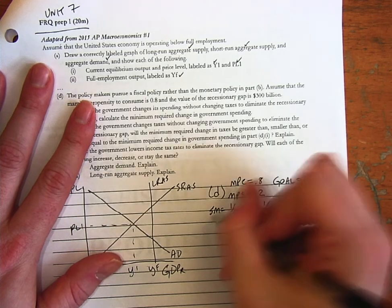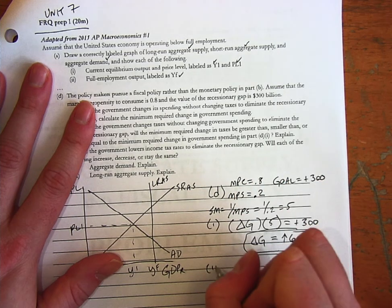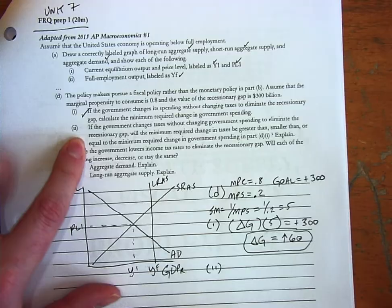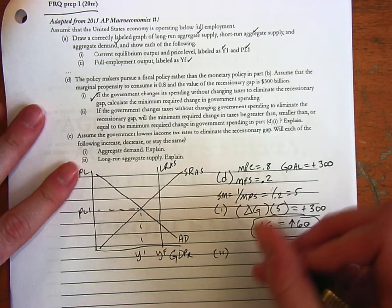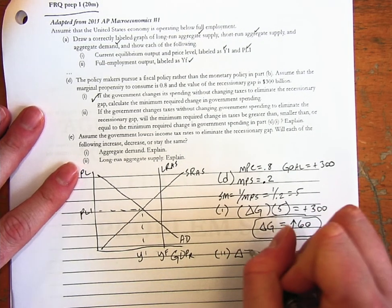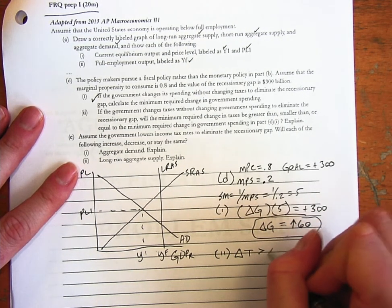Let's do part, so that's part 1. Part 2, so we can check that one off. Part 2 says if the government changes taxes without changing spending to eliminate the gap, will the minimum required change in taxes be greater than, smaller than, or equal to the change in spending?